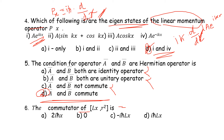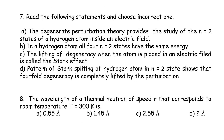Question 6: The commutator [Lx, r²] = [Lx, x²] + [Lx, y²] + [Lx, z²]. Working through the derivation, the answer is zero. The correct answer is zero.